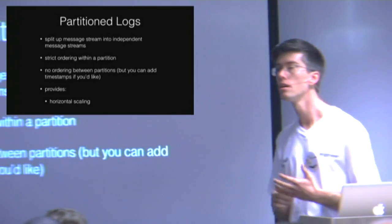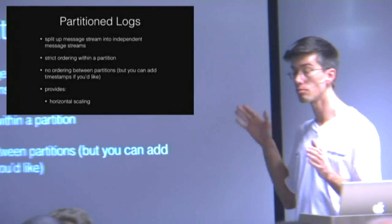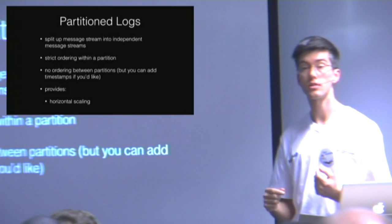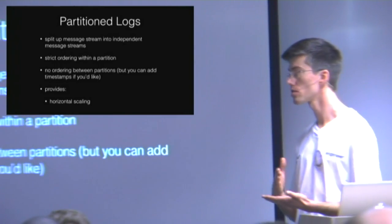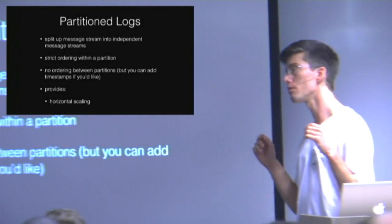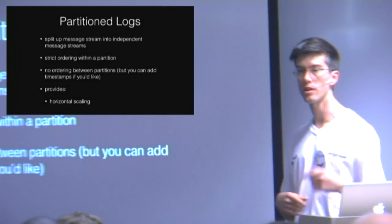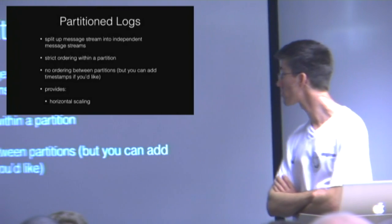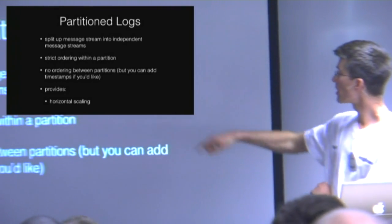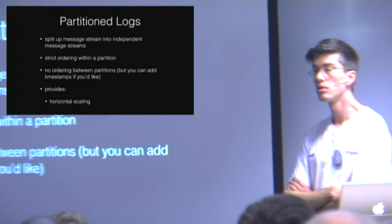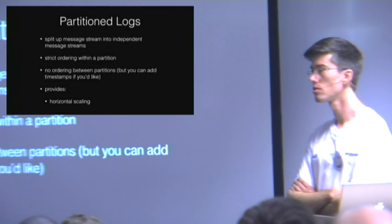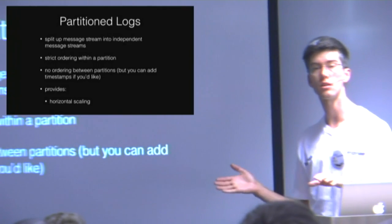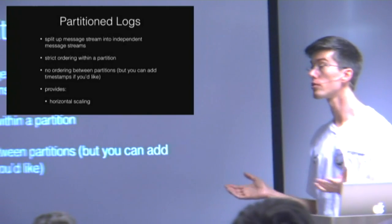I'll do a little demo later to show you just that. Your number of partitions defines how many workers you can have. Kafka is very efficient at keeping track of how far a worker is through a log — it stores offsets. If one of your workers falls over, others can pick up where it left off. There's no guaranteed ordering of any kind between partitions. It could happen that a producer writes to one partition for a long time before writing to another.